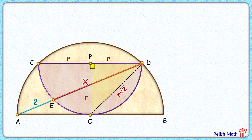Now OD is also the radius of this brown semicircle, and thus the radius AO is r√2 and OB is r√2. Also, with respect to this purple semicircle at point O, AB is tangent. We know that a tangent is always perpendicular to the radius, so angle O is 90°. With respect to CD and AB, PO is a transversal and the sum of co-interior angles is 180°, so CD is parallel to AB.